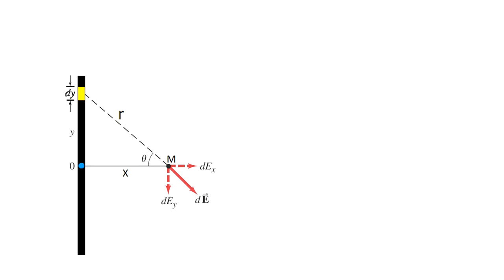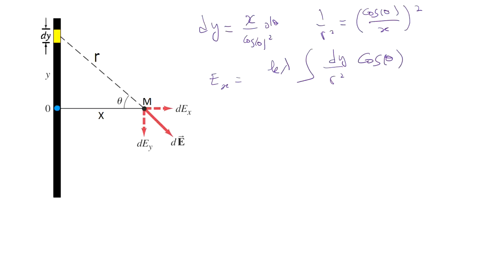Now I need r. Cosine of theta equals x over r — that is the adjacent over the hypotenuse. So one over r squared equals cosine squared of theta over x squared. Now, dy is x over cosine squared of theta times d-theta, and one over r squared is cosine squared of theta over x squared.